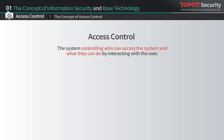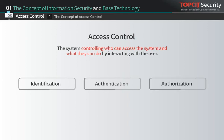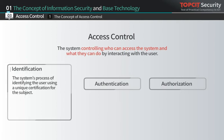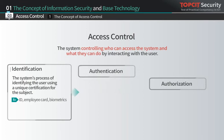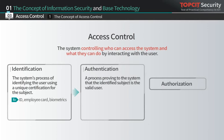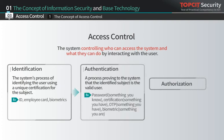Access control is the system interacting with the user to control who can access the system and what they can do. It is divided into three parts: identification, authentication, and authorization. Identification is a process for the system to use a unique certification to identify the subject — IDs, employee cards, and biometrics fall into this category. Authentication is a process to prove to the system that the subject is the identified user, using knowledge-based passwords, ownership-based certifications, OTPs, and biometrics.